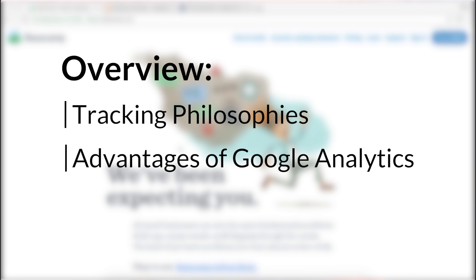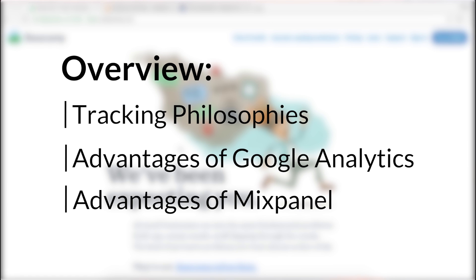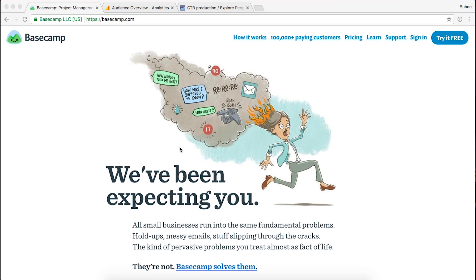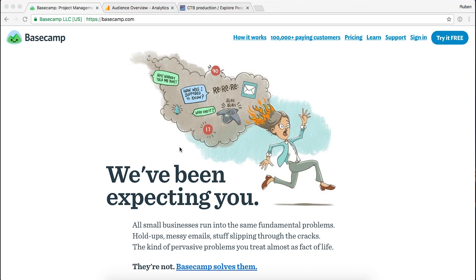First, I want to help you understand the differences in tracking philosophies between Google Analytics and Mixpanel — we'll talk about event-driven tools versus page view tools. Then I want to show you what Google Analytics is really good for and why you would keep it. And third, I'll show you what Mixpanel is good for, and then you'll see how they can be complementary and why some companies keep both. So let's start with tracking philosophies. We're here looking at Basecamp.com — they're a project management tool, and this is a good example of a company that could benefit from keeping both tools.